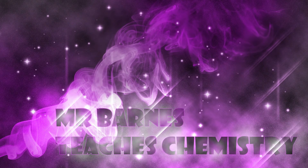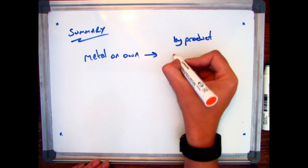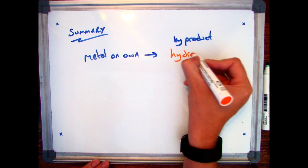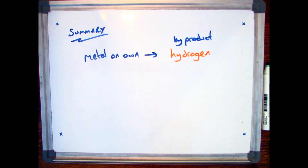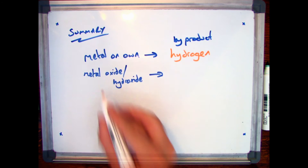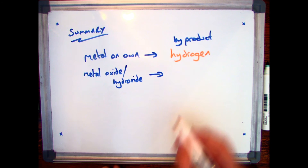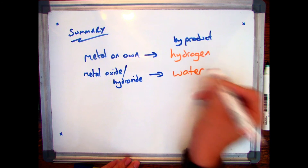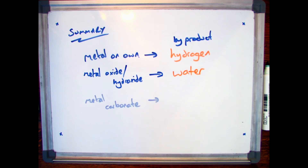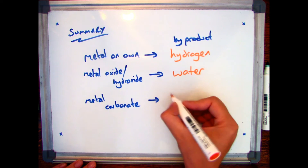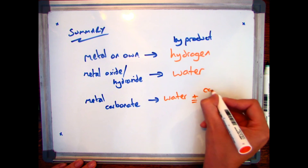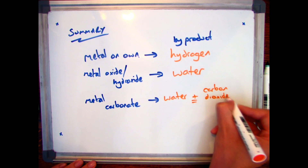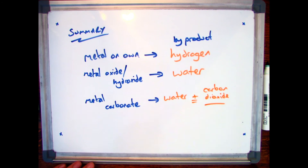Let's go through a summary of the by-products. If I have a metal on its own, my by-product will be hydrogen — salt plus hydrogen. If I have a metal oxide or metal hydroxide, my by-product will always be water. And finally, if I have a metal carbonate, I'll get my salt plus water plus carbon dioxide.